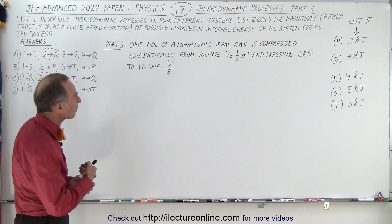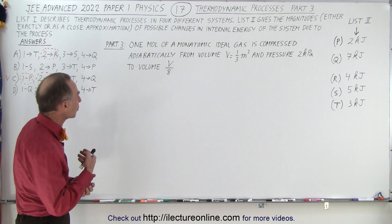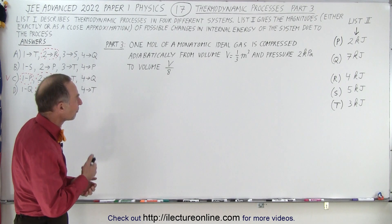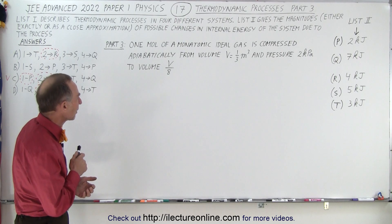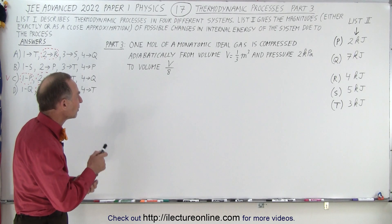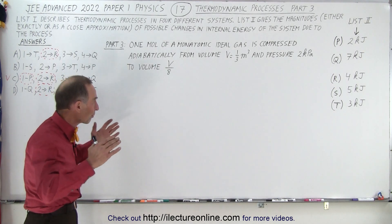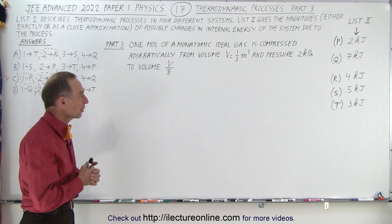It says one mole of a monatomic ideal gas is compressed adiabatically from volume V equals one-third cubic meters and pressure two kilopascals to volume V divided by eight. In other words, the original volume is compressed to one-eighth the volume.